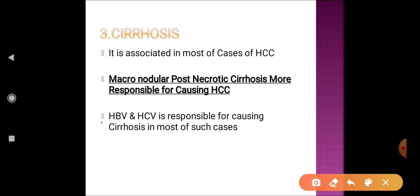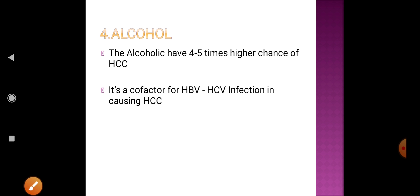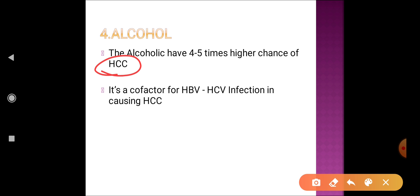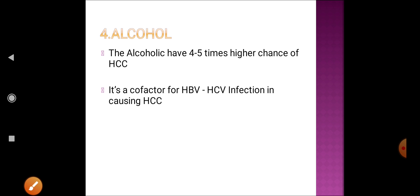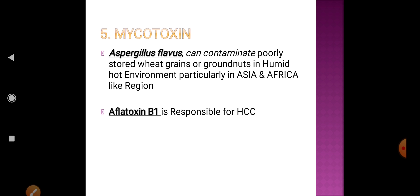HBV and HCV are the main factors ultimately responsible for causing cirrhosis and ultimately HCC. The fourth important factor is alcohol intake. If your alcohol intake is very high, there is approximately four to five percent higher chance of development of HCC. However, alcohol alone does not usually cause hepatocellular carcinoma — co-factors like HBV or HCV infection are usually associated.